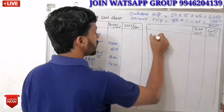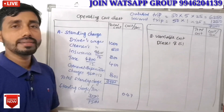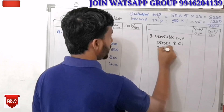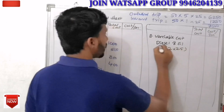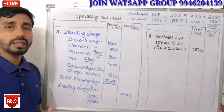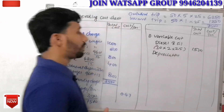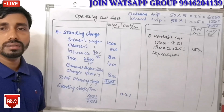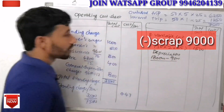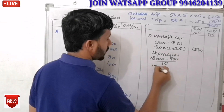This completes the fixed charges section. The second part is the variable cost. The variable cost includes diesel and oil, which is 30 per trip. There are 2 trips per day, giving 1,500 per month for diesel. Next is depreciation. The cost of the truck is 180,000, scrap value is 9,000, so the depreciation comes to 1,000 per trip.